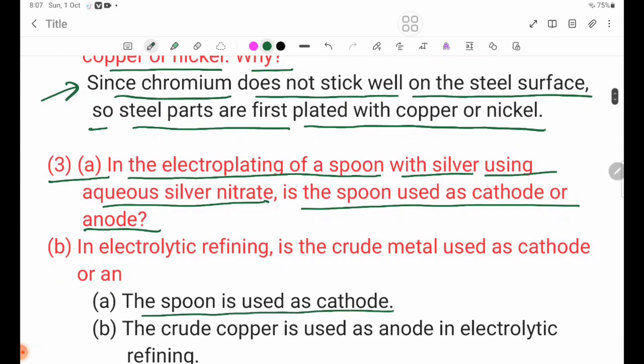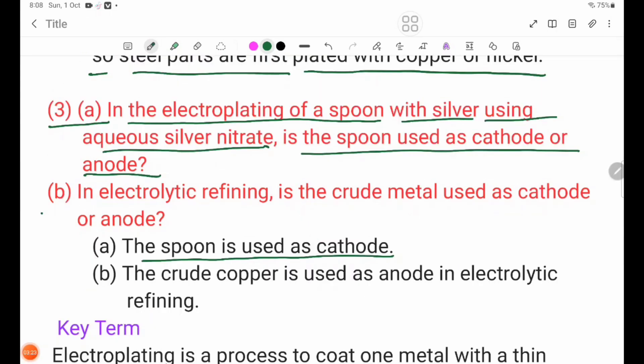The spoon is used as cathode. Crude copper is used as anode in electrolytic refining.